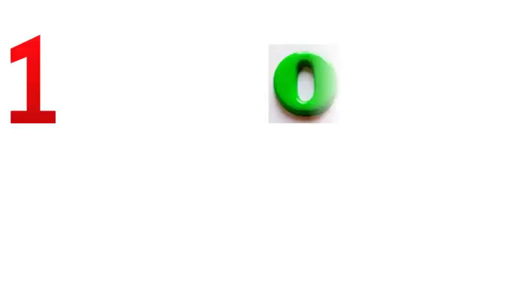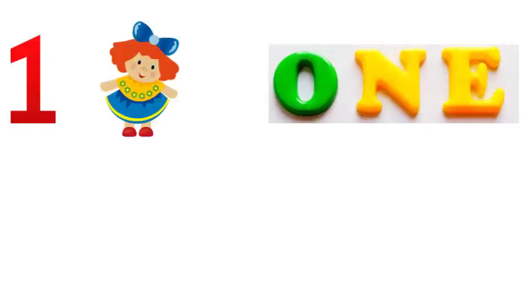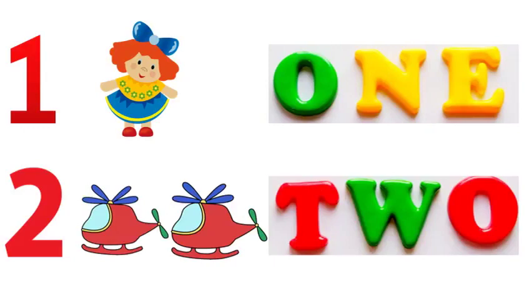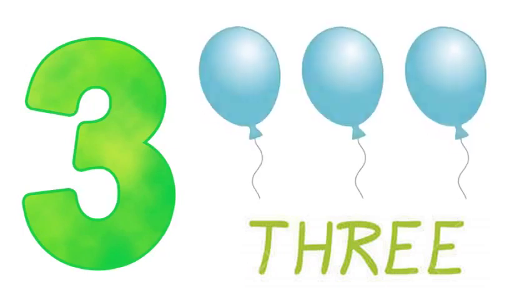We will be learning what is 3 and not 3. You all know that each number has a value associated with it. We denote number 1 with 1 object, number 2 with 2 objects, and number 3 with 3 objects.